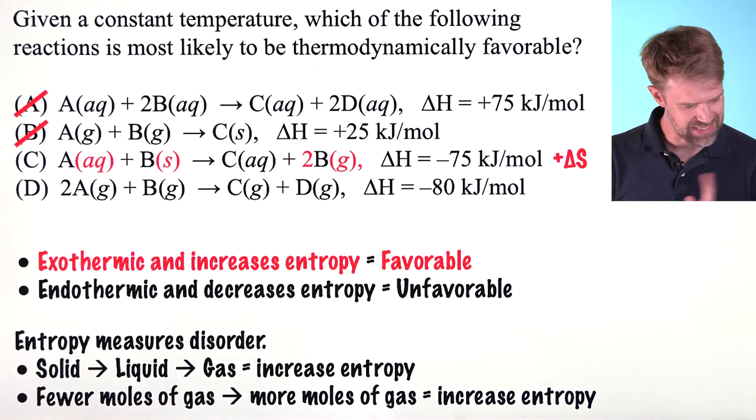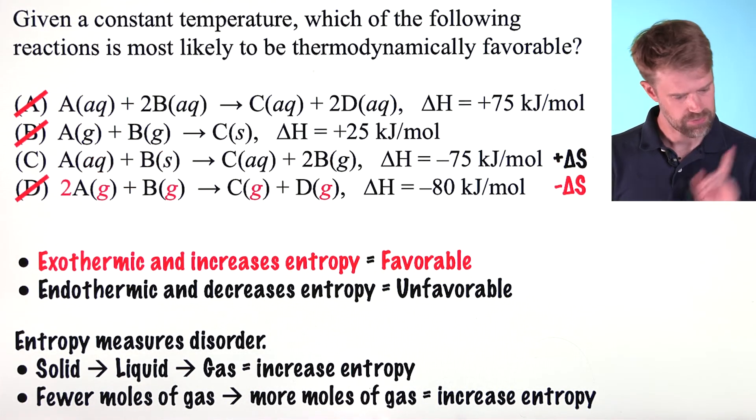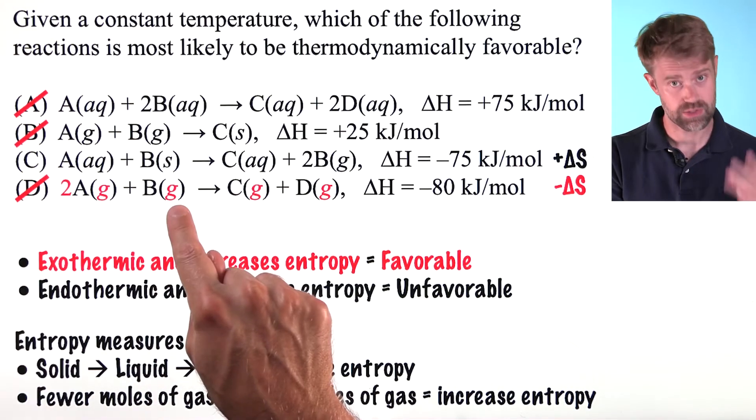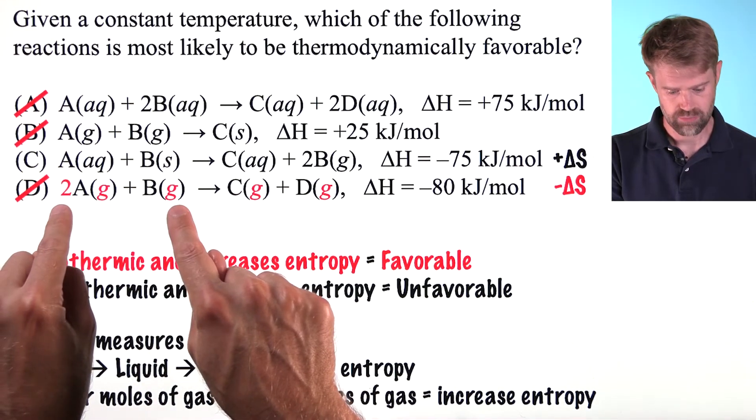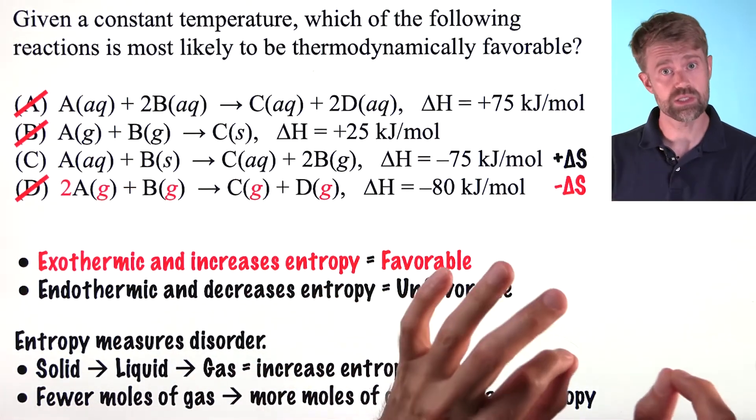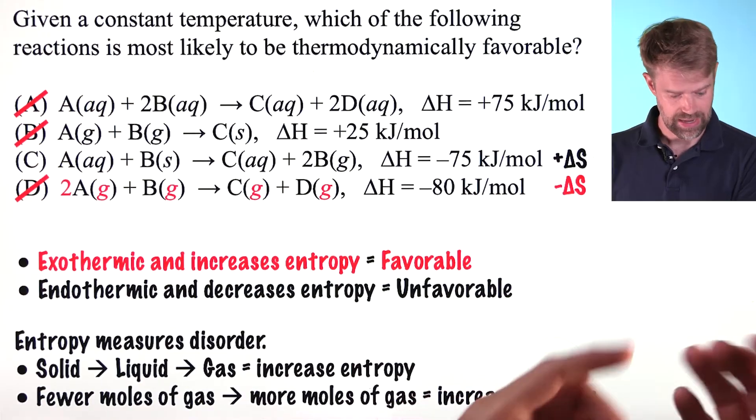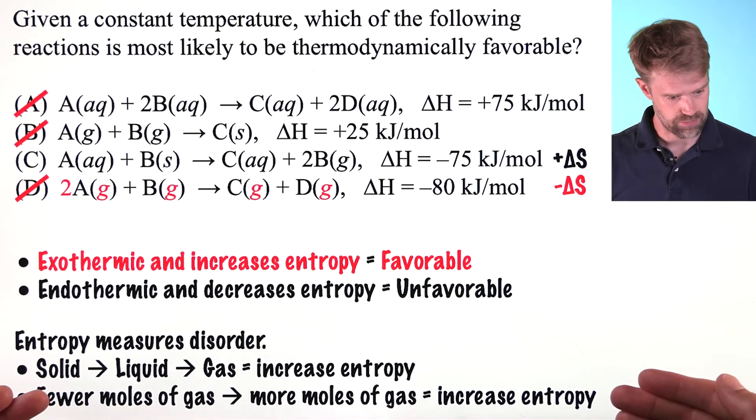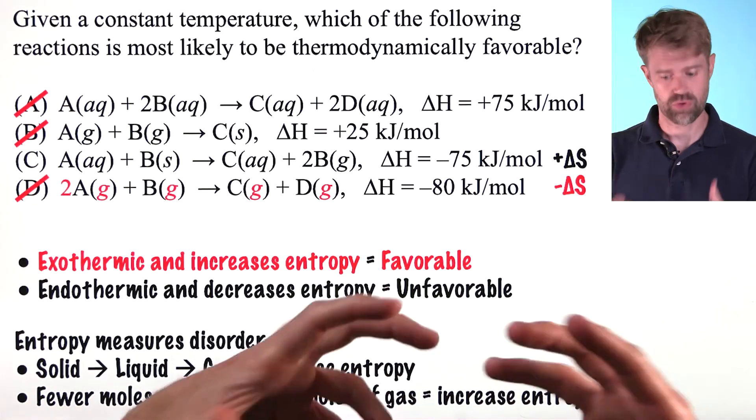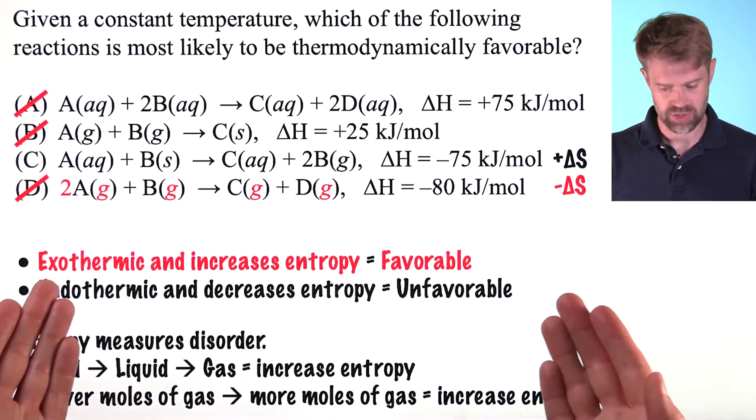Here we see that two plus one, that's three moles of gas, produce two moles of gas. That's a decrease in the number of moles of gas and thus a decrease in entropy. So, it is not going to be thermodynamically favorable in this context.